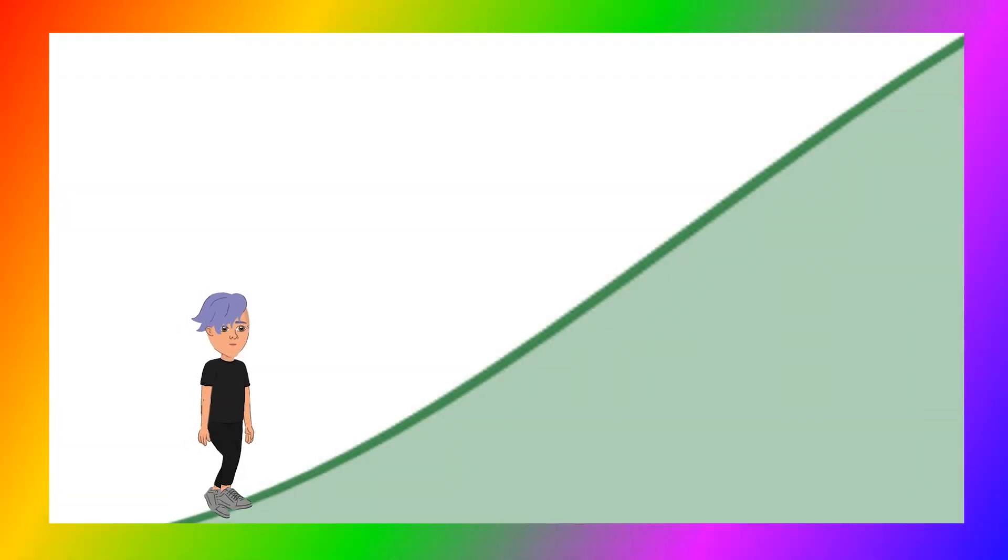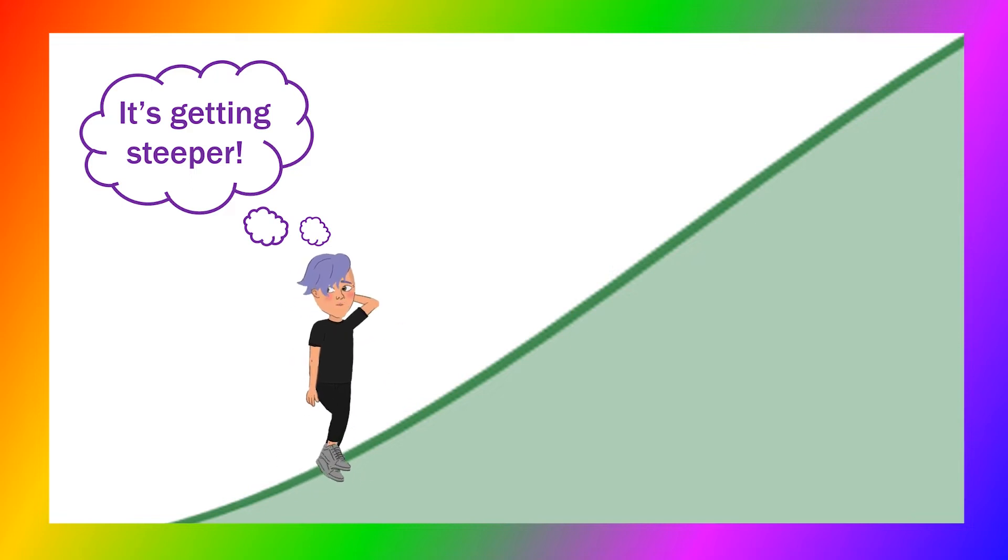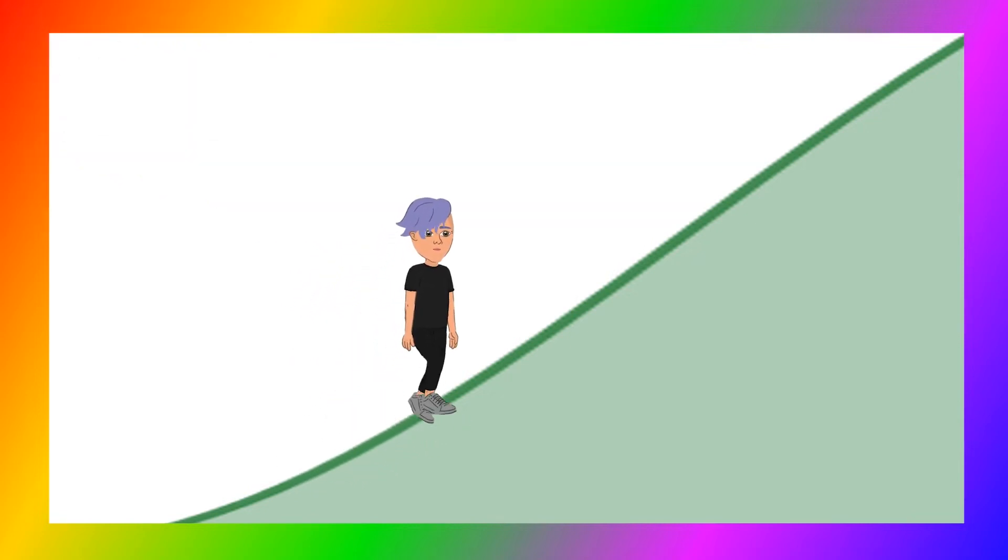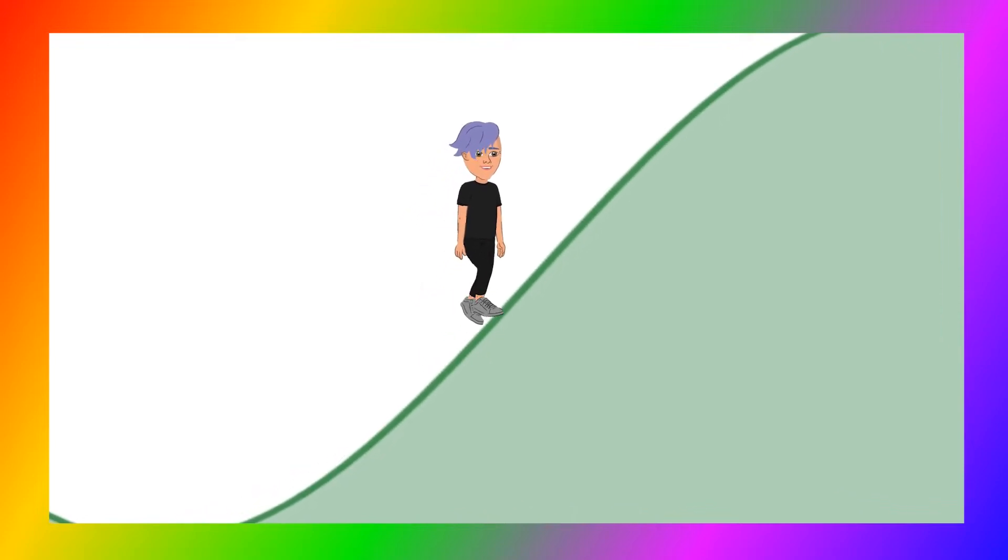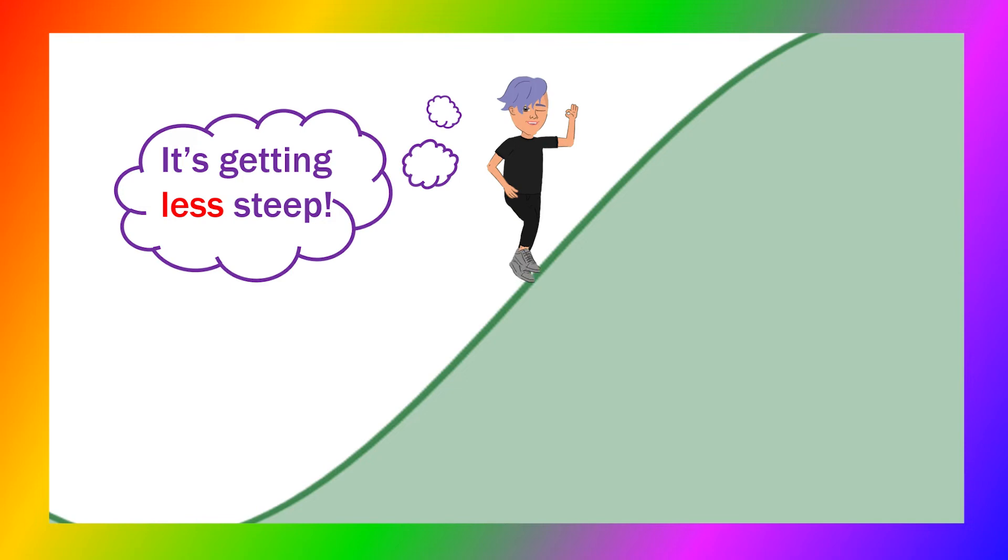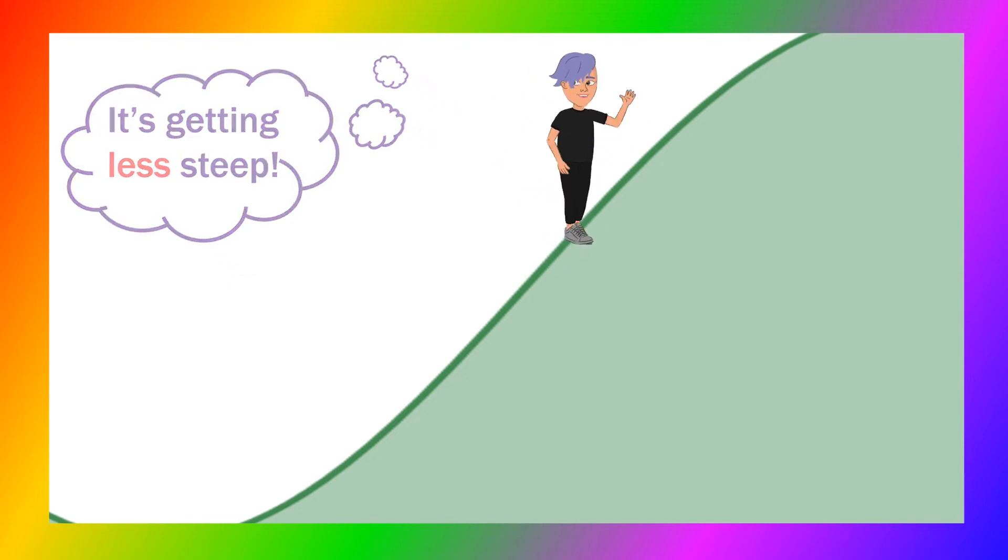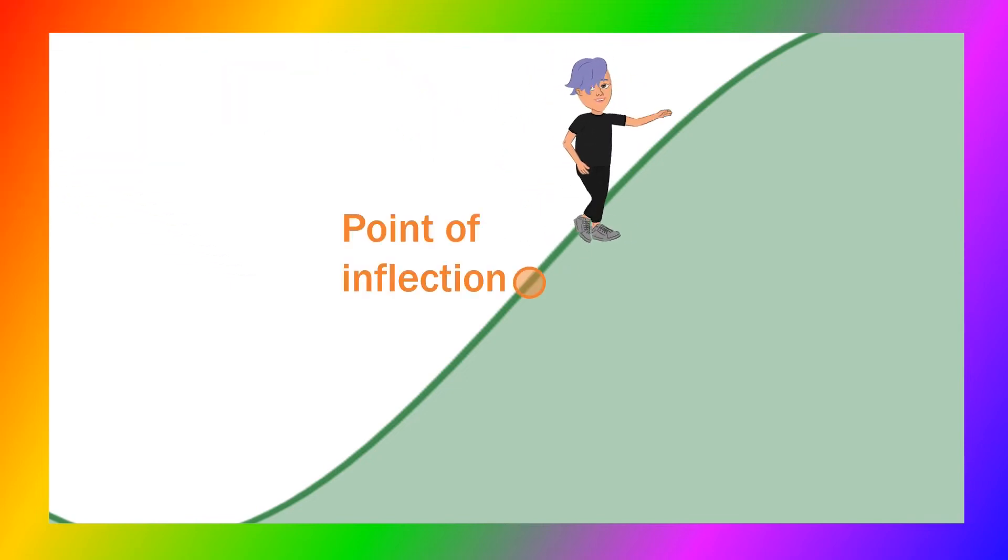Imagine you're walking up a hill. It's a steep hill and it's getting steeper. It's hard work but you keep going and at some point you realize it's getting easier. The hill is getting less steep. That point is called a point of inflection.